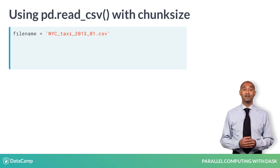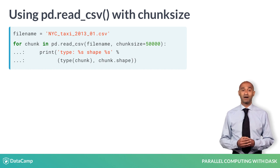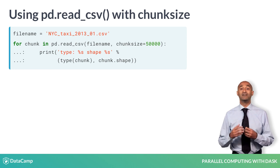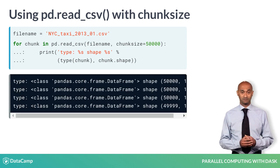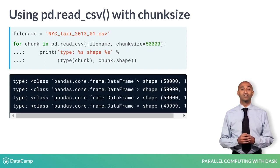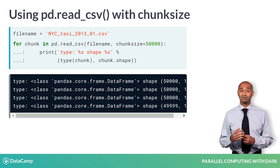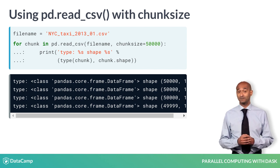Then, using read.csv with the parameter chunkSize equals 50,000, the function returns an object we can iterate over. The loop variable chunk takes on the values of four successive dataframes, each having 50,000 lines except the last, because the first line in the file is the header line.